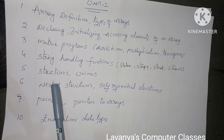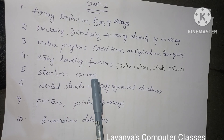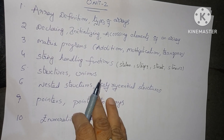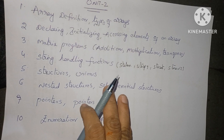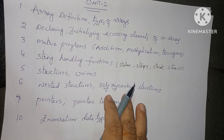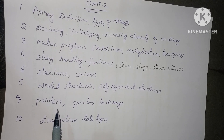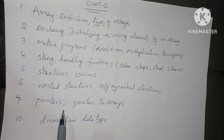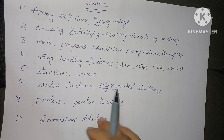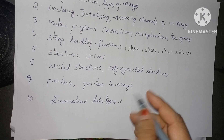Next: what is a structure? How to access the structure, and provide an example program for structure. Similarly, what is a union, how to access the elements of a union, and the difference between structure and union — a very important question. Also cover nested structure, self-referential structures, and pointers: what is a pointer, different types of pointer operators, pointers to arrays, pointers to structures, and the enumeration data type.